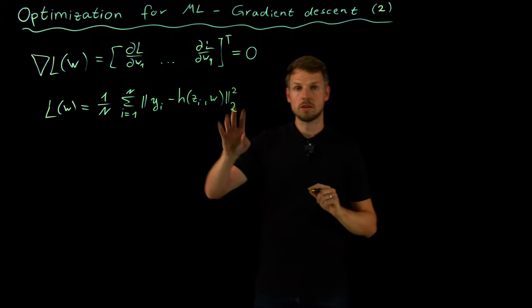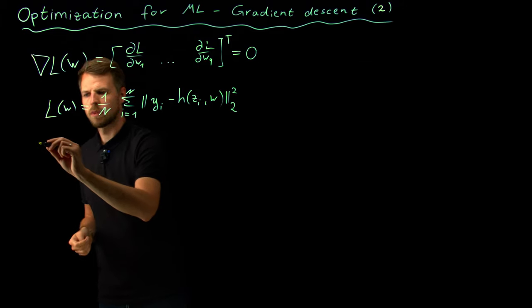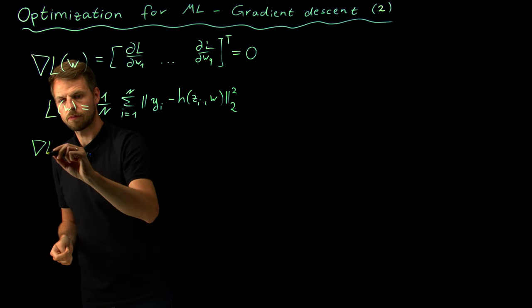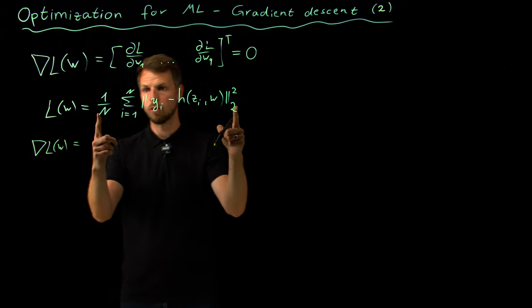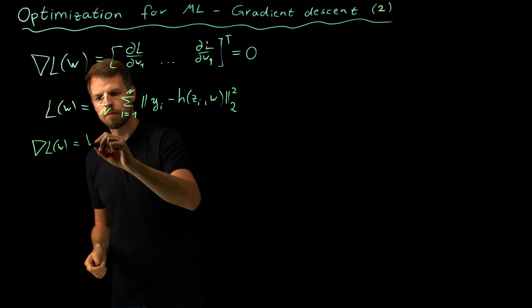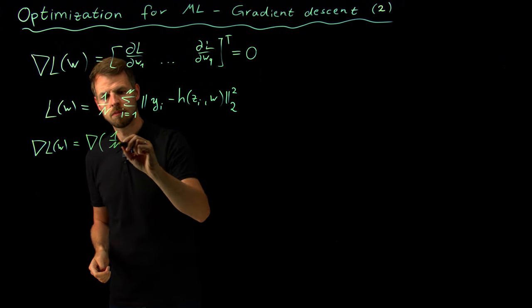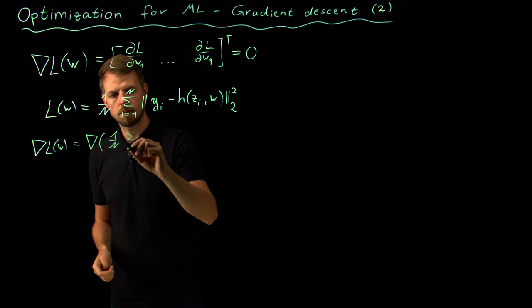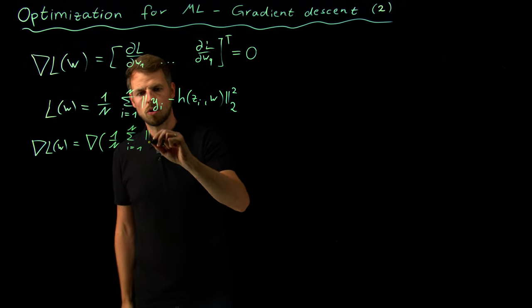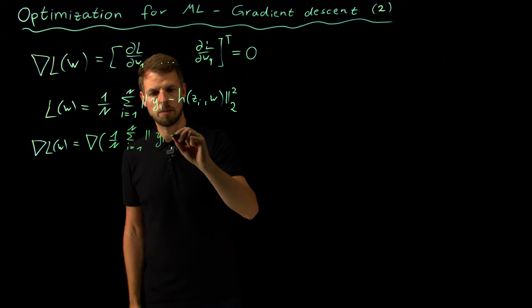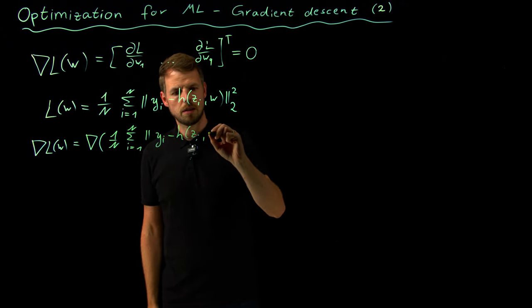All right, and now taking the derivative. You see that this is the derivative, or the gradient of all of this, is taking the gradient of this, then the same norm.